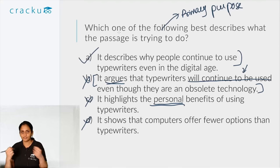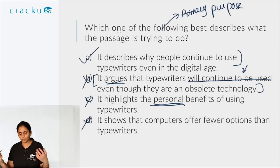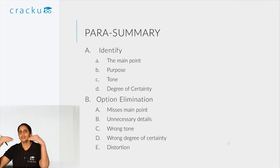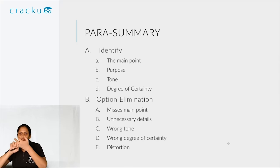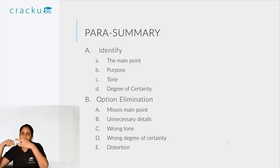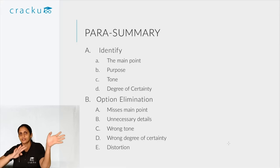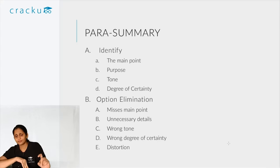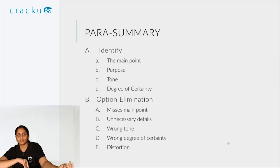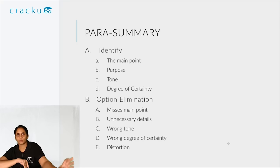Now that we have covered RC, let's move to para summary. Your checklist for para summary should be: first, identify the main point the author is trying to say. Second, identify the purpose — is the author trying to convince you, inform you, or narrate an incident? Third, identify the tone. As with passages, there is negative, positive, and neutral tone, and objective and subjective tone. Being able to describe the paragraph's tone will help you eliminate options quite a bit.